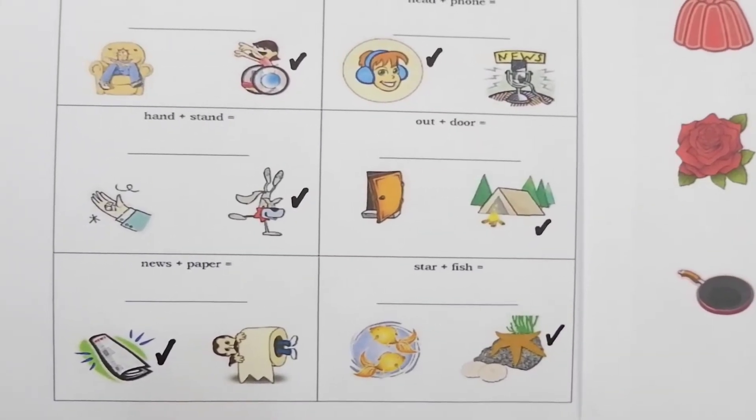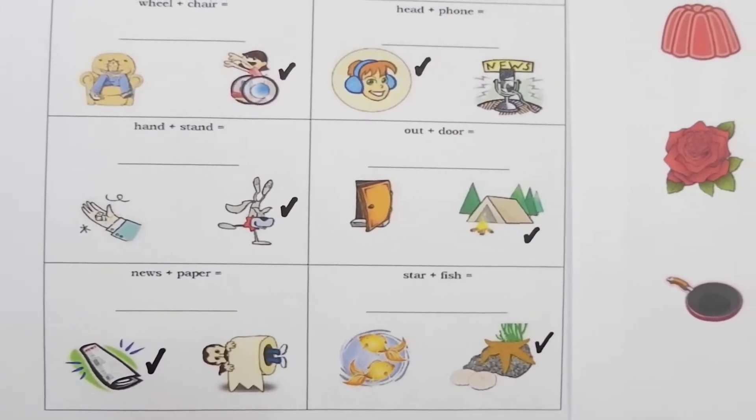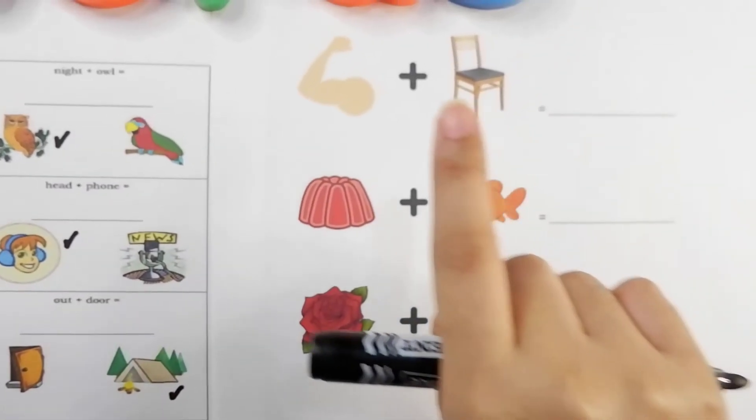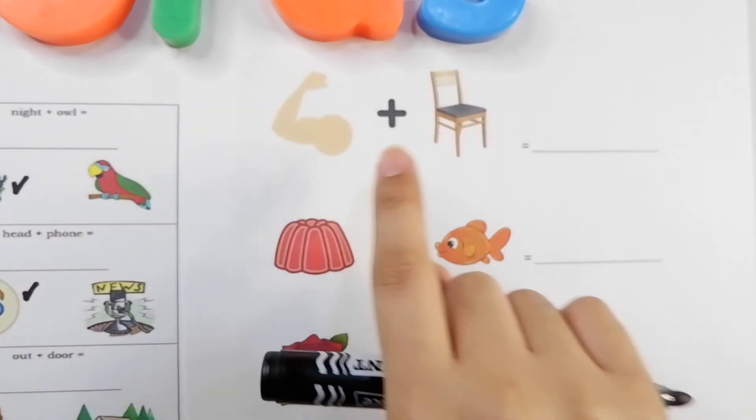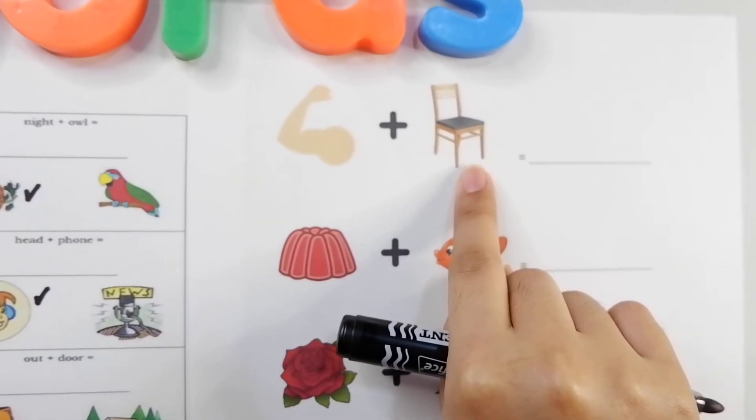Do you want to learn some more? Let's keep practicing. Over here at this side we have pictures. This one is an arm and this one is a chair. Let's put them together to form a new word.